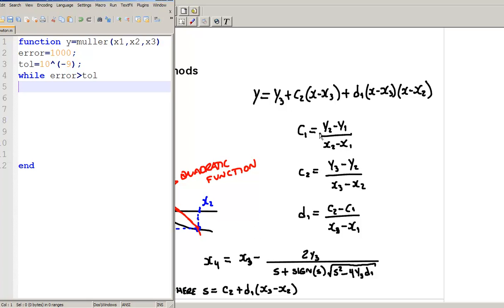Let's go ahead and define y1, y2, and y3. We can say y1 equals to the function value at x1. And then, y2 equals to the function value at x2. y3, function value at x3.